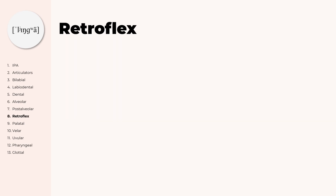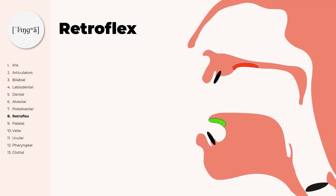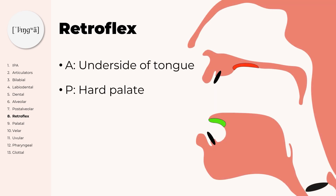After the post-alveolar consonants come the retroflex consonants. They are produced with the underside of the tongue against the hard palate, that is behind the alveolar ridge in the mouth.